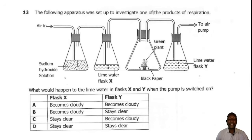Question 13. The following apparatus is set up to investigate one of the products of respiration. What would happen to the lime water in flask X and Y when the pump is switched on? The investigation which is occurring here, since we have lime water, we are investigating carbon dioxide. Since we have sodium hydroxide available in the first flask, which will absorb carbon dioxide, in flask X no reaction will take place because there is absence of carbon dioxide. Then once the air goes into the flask where there is the green plant in a black paper bag, since there is a black paper bag, the plant will only be carrying out respiration and not photosynthesis. So this plant will produce carbon dioxide, which will then move into flask Y and turn the lime water cloudy. So flask X will stay the same and flask Y becomes cloudy. The correct answer here is C.